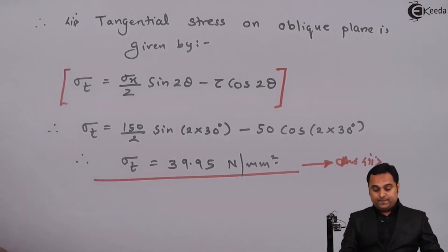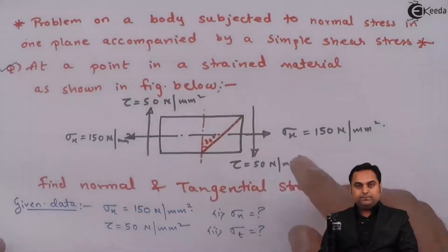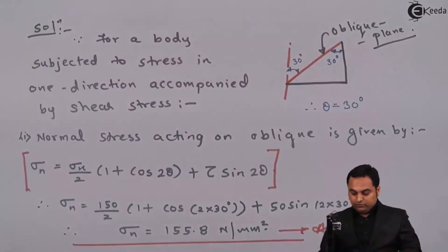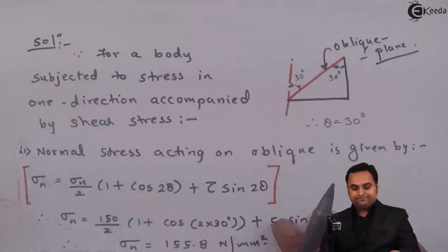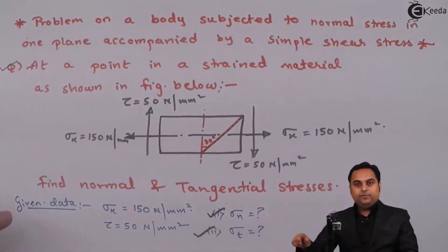Now if we look into the question, they were asking us to calculate sigma n and sigma t on this oblique plane. We have found both the values, and once we know both the values, we can say that the problem has been completed.